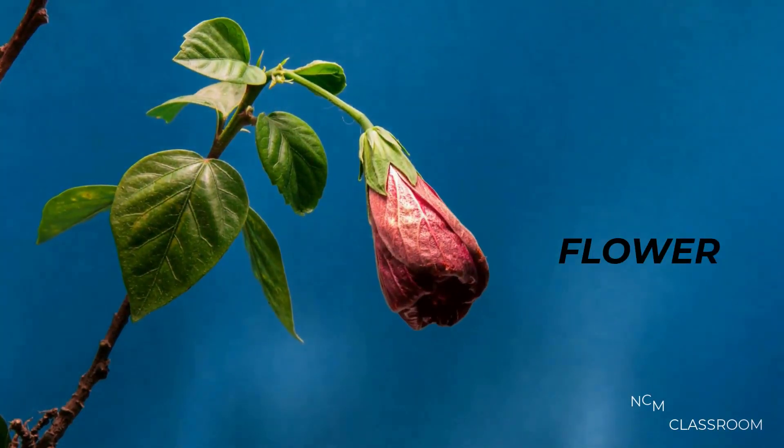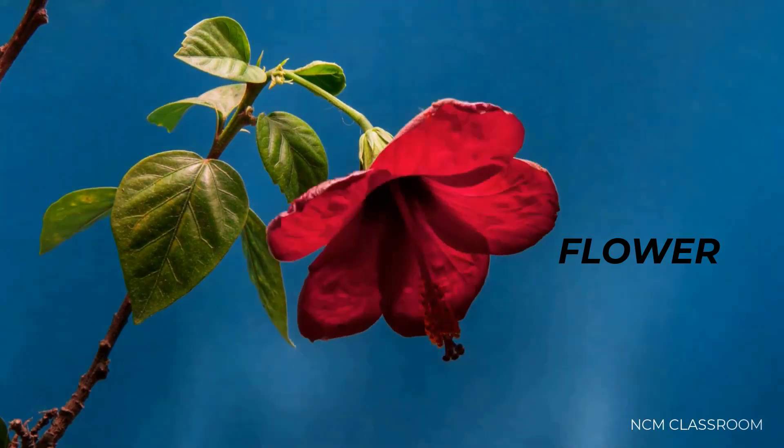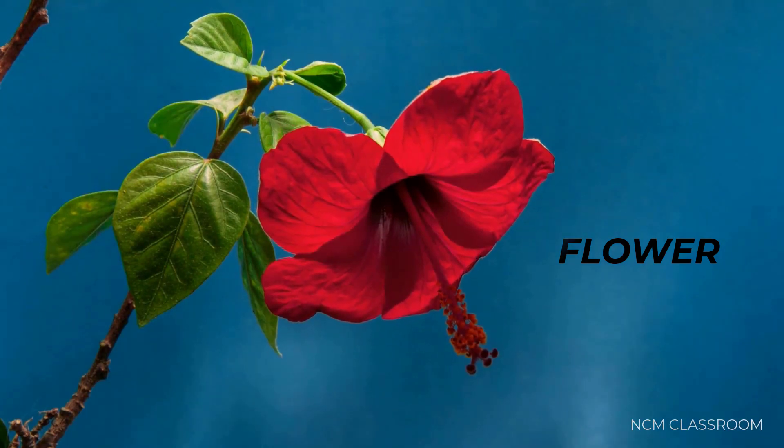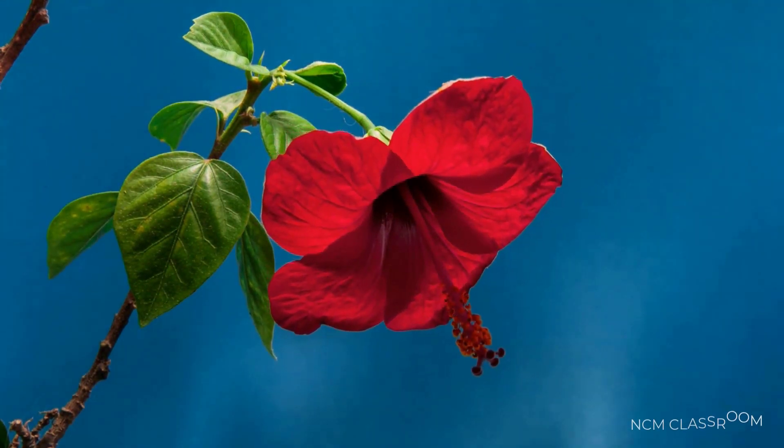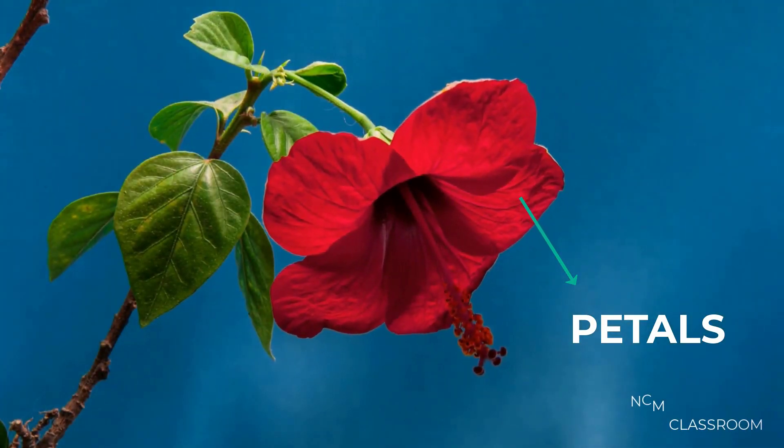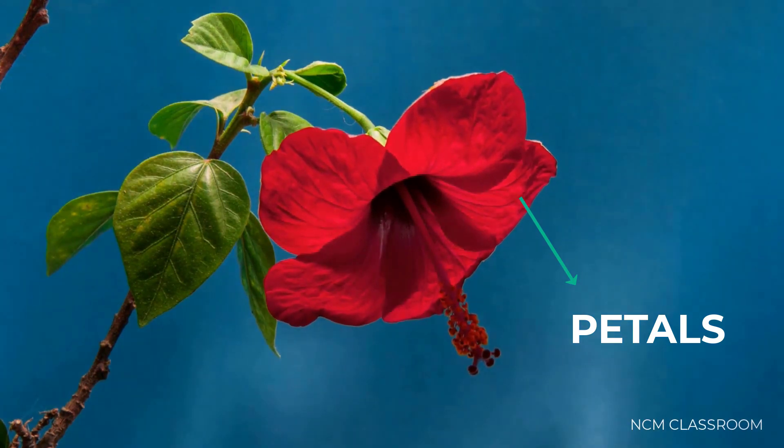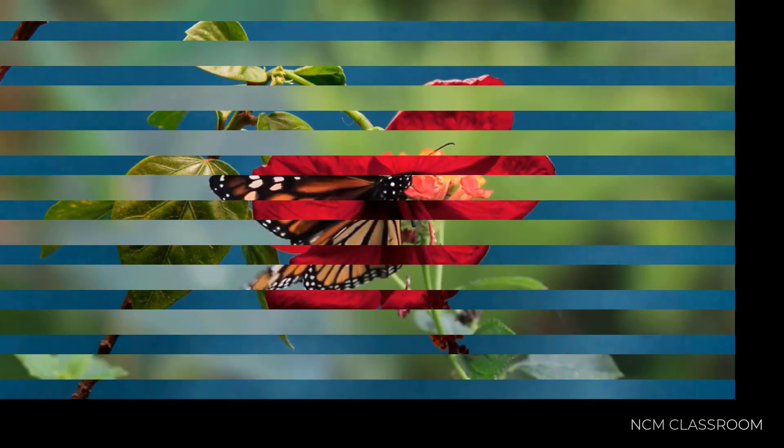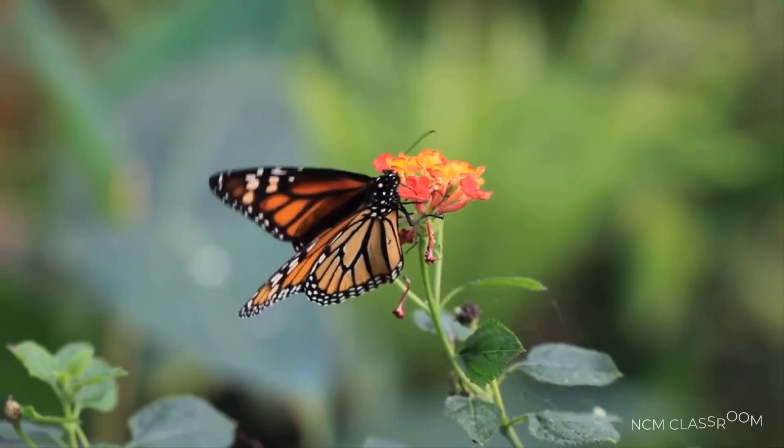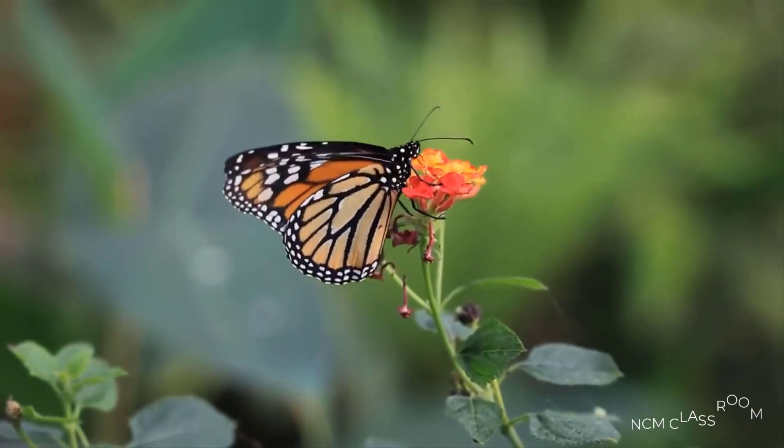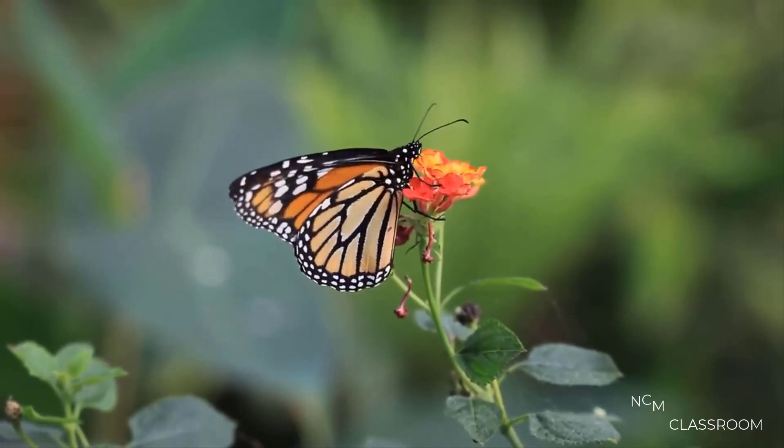Now the flower: this is the most important part of the plant. It has the colorful parts called petals. These petals help to attract insects for pollination. Pollination means transfer of pollen grains onto the stigma to produce fruits.